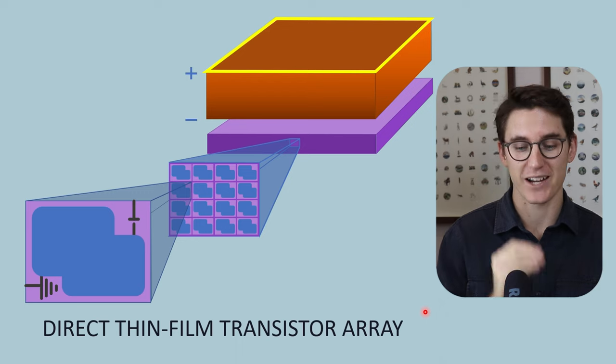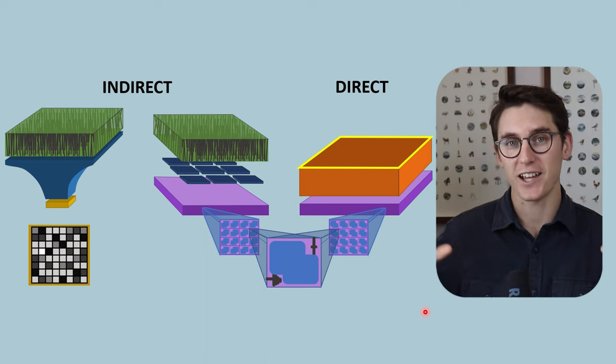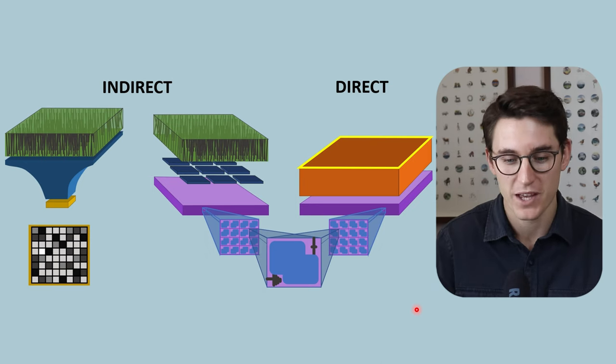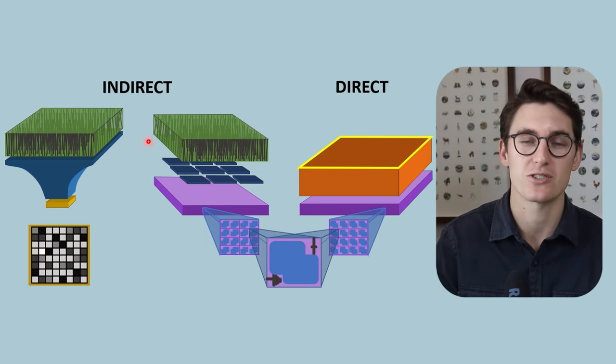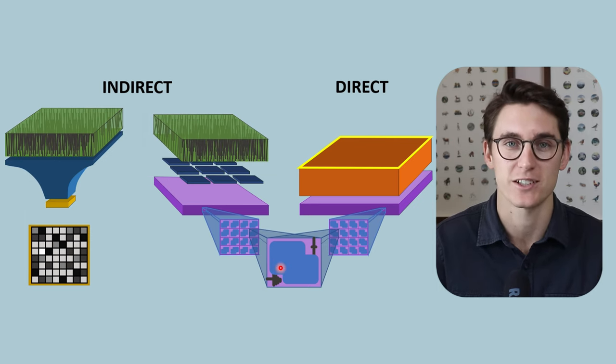Now we're going to look at our direct thin film transistor array, which doesn't require scintillation. It's still a digital radiography system, but we don't convert x-rays to light first. We convert x-ray energy directly into an electronic signal.